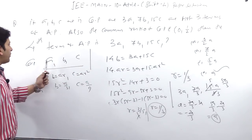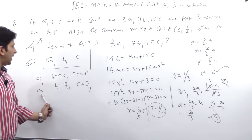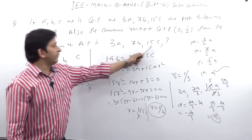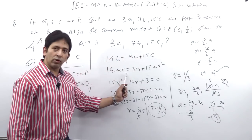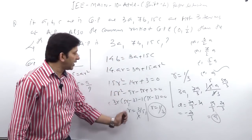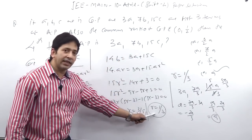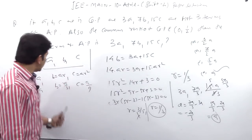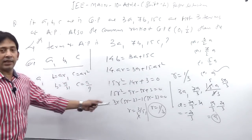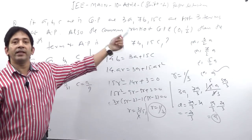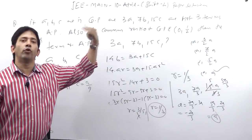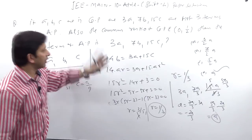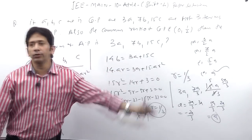To summarize: write A, B, C in terms of R, substitute to form a quadratic in R, find R, then express AP terms to find any desired term — 4th, 10th, or anything asked.